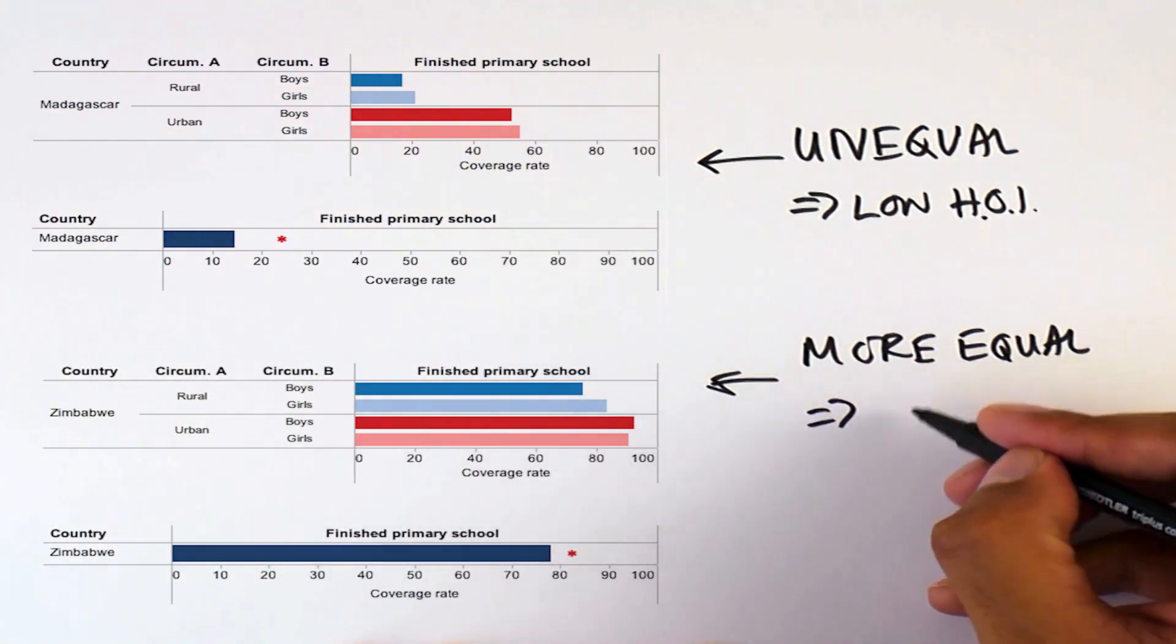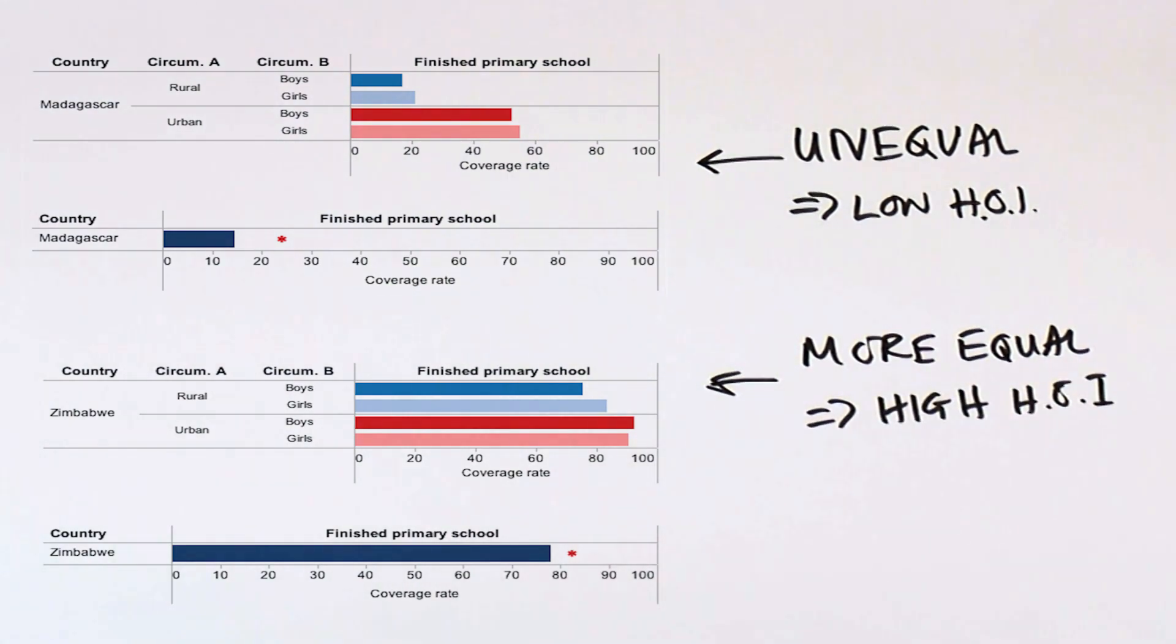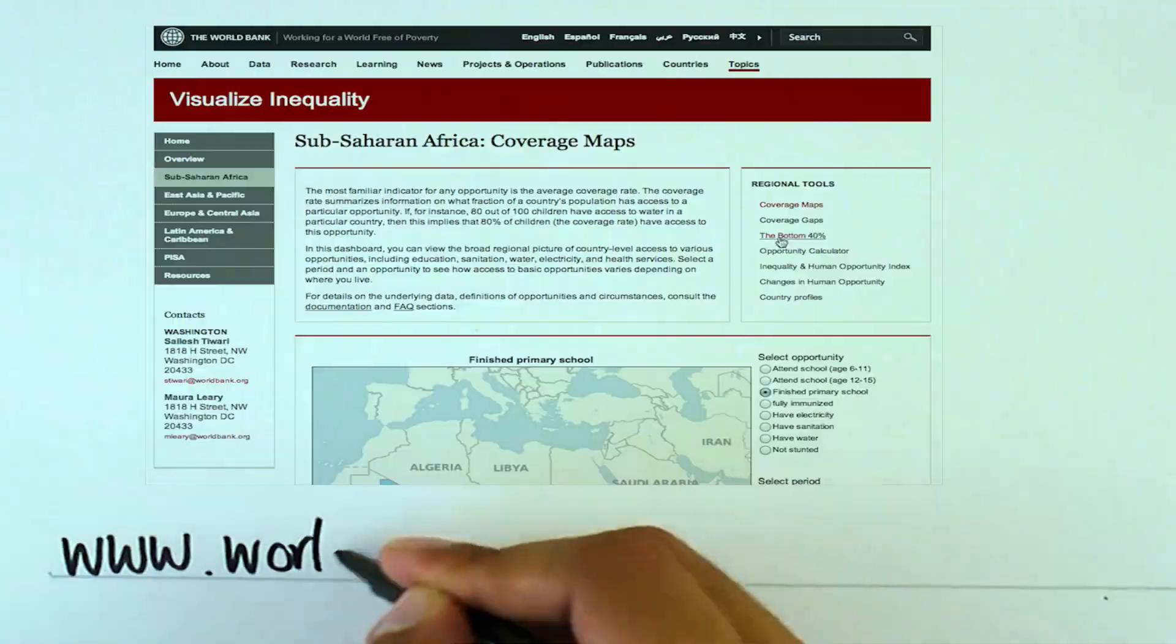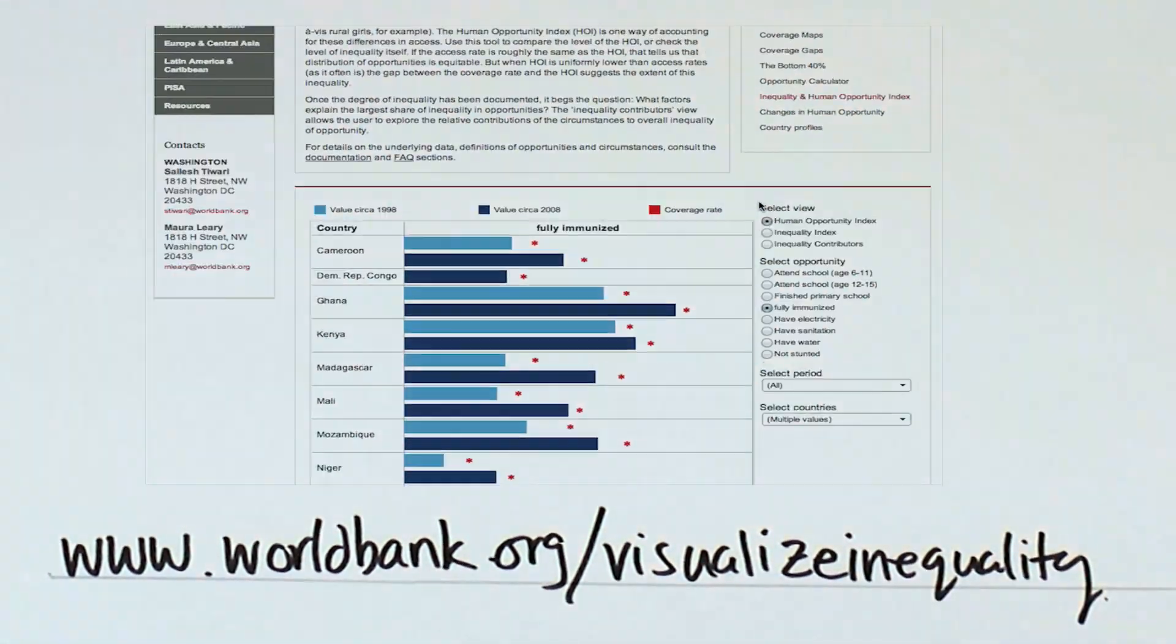In other words, the Human Opportunity Index is coverage corrected for inequality. You can find out more about inequality of opportunity by exploring our Visualize Inequality Dashboard.